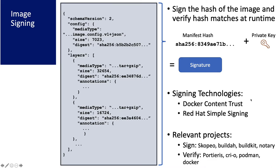The most common signing technologies today are Docker Content Trust and Red Hat Simple Signing. They both do basically very similar things, but have different protocols and design decisions. Relevant projects on the signing side include Skopeo and Builder for Red Hat Simple Signing, and BuildKit and Notary for Docker Content Trust. For verification, there's Portieris — a Kubernetes admission controller from IBM — the CRI-O runtime, Podman, and the Docker daemon.